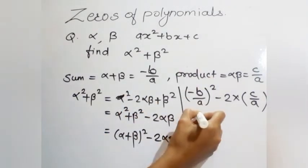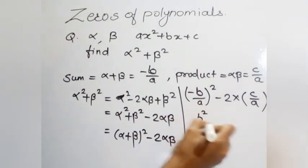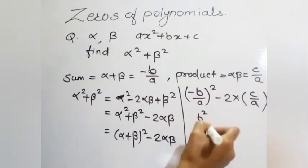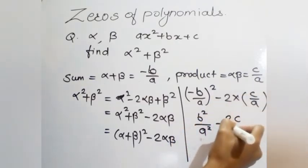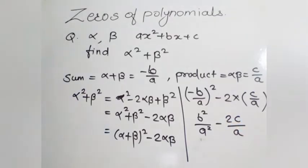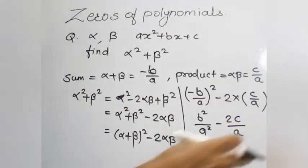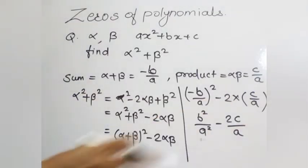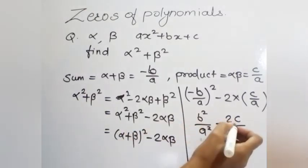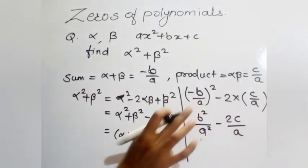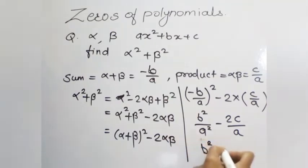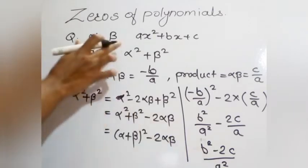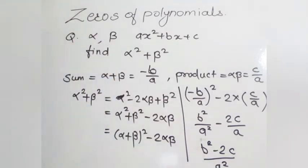Minus b squared gives b² upon a², minus 2 into c gives 2c upon a. Combining with a common denominator of a², we get b² minus 2ac upon a². So the value of alpha² + beta² is (b² − 2ac) / a².